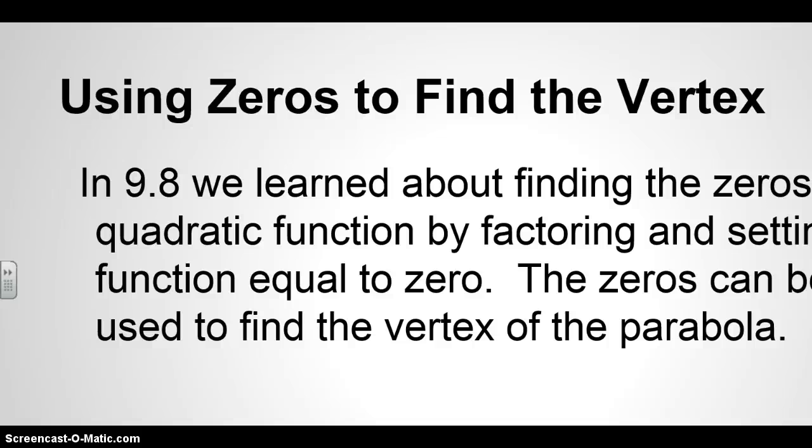So what we're going to do is we're going to connect how we find the vertex working with quadratic functions. And so, what we're going to talk about from this point forward relates a lot to what we learned in 9.8 with taking quadratic functions and setting them equal to zero. So, in 9.8 we learned about finding the zeros of a quadratic function by factoring and setting the function equal to zero. And the zeros can be used to find the vertex of your parabola graph.